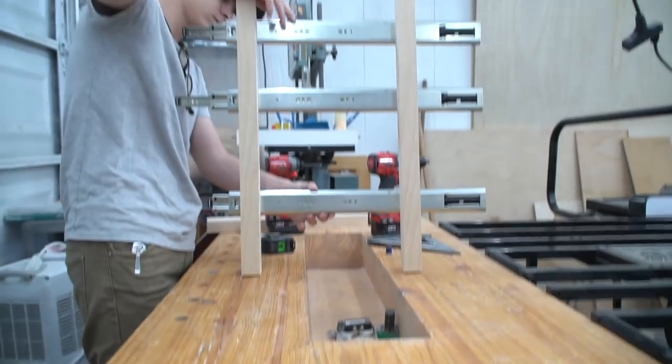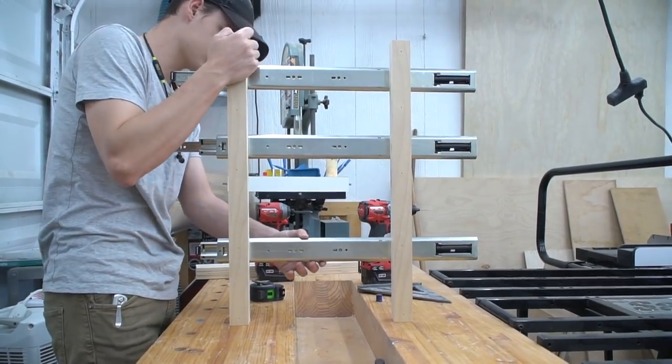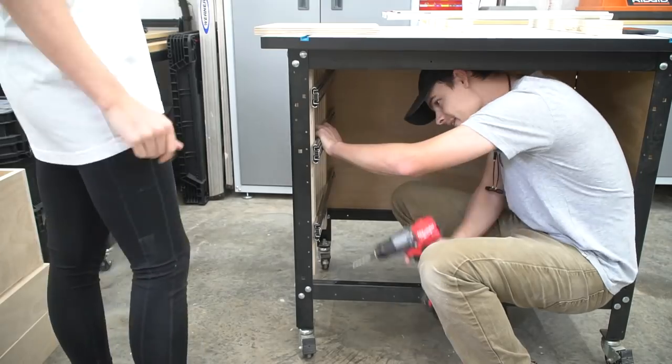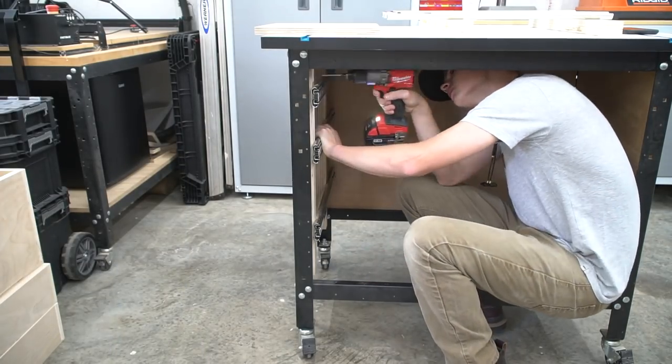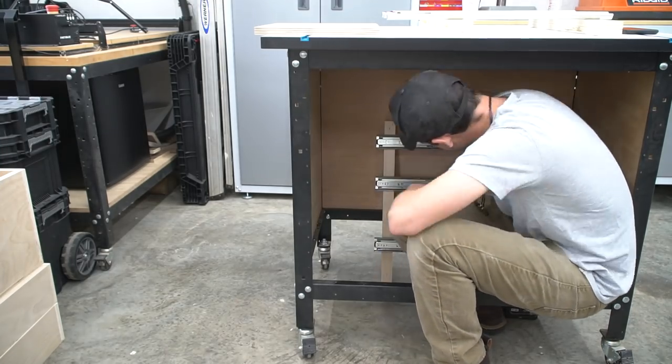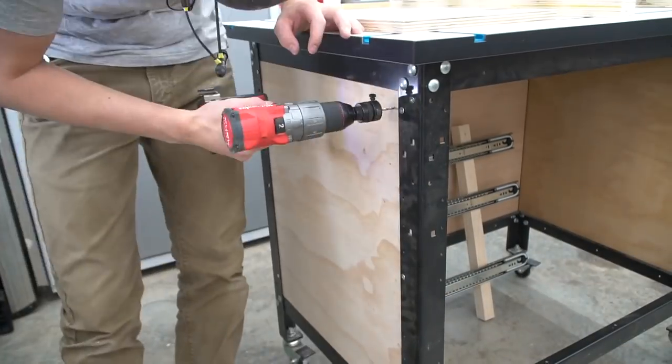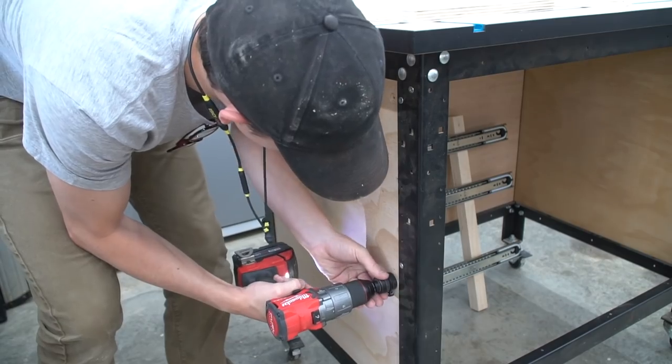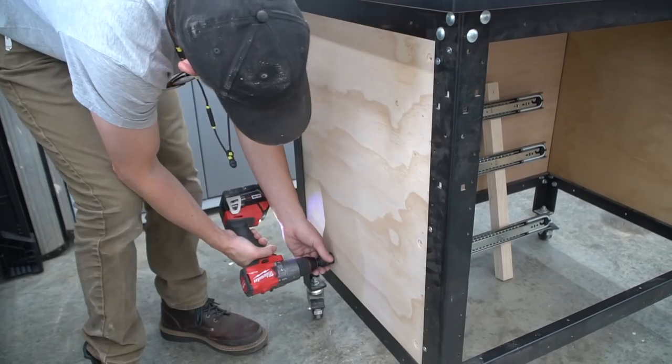Speaking of drawer slides, these are super heavy-duty AcuRide drawer slides that I'll link in the description below. Once you have made both side assemblies, it's time to mount them inside the stand. I held the assembly in place while Molly used a ¾ inch spacer on the front. This spacer will allow the drawer front to sit flush with the front of the stand later.